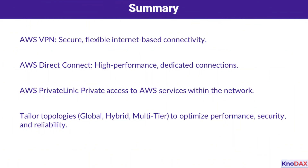In summary, AWS provides a range of connectivity options: AWS VPN for secure, internet-based connections; AWS Direct Connect for high-performance dedicated links; and AWS PrivateLink for private, internal communication. With topologies like global, hybrid, and multi-tier architectures, you can optimize for performance, security, and reliability. AWS makes it possible to tailor your network to meet your business needs, ensuring you're always ready for growth.